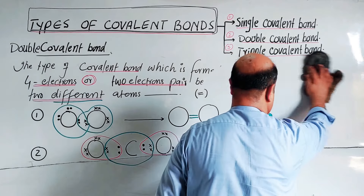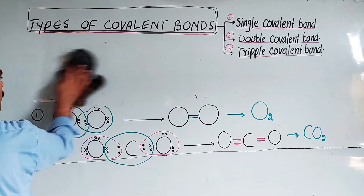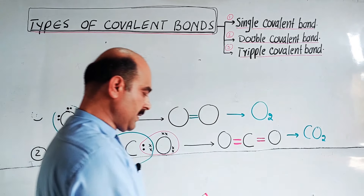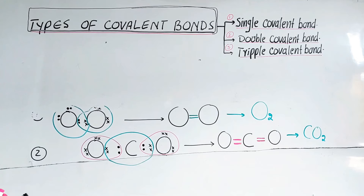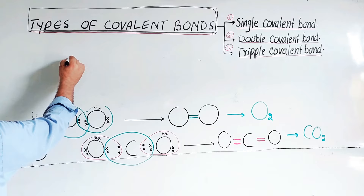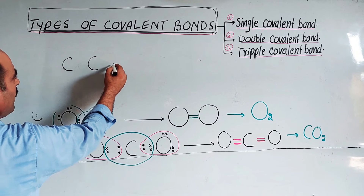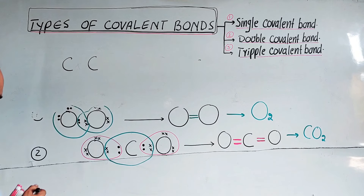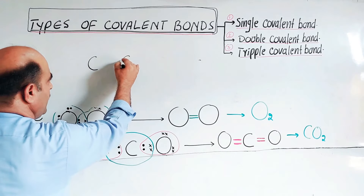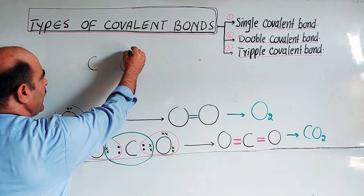Example three for double covalent bond is the formation of ethene (C2H4). In the ethene molecule, two carbon atoms and four hydrogen atoms are involved. Each carbon has 4 valence electrons and each hydrogen has 1 electron.